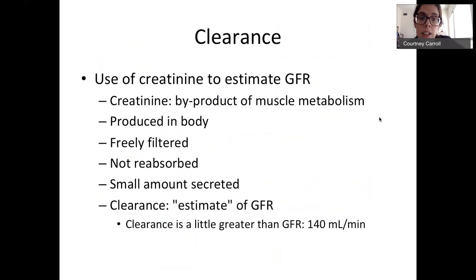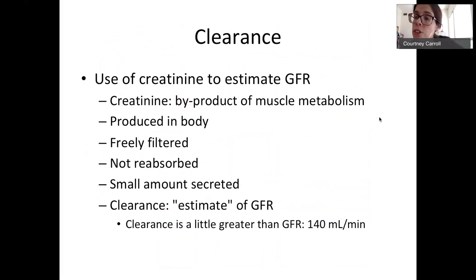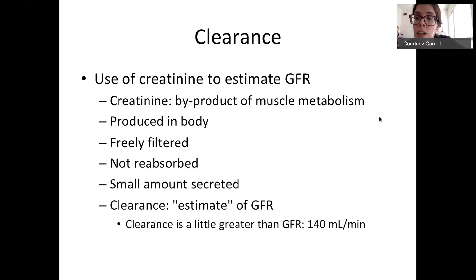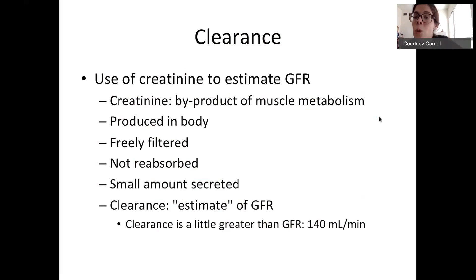You can also use creatinine — if you don't have inulin — to measure and estimate GFR. Creatinine is a byproduct of muscle metabolism. It's produced in the body, it's freely filtered, and it's not reabsorbed — it will easily pass from the blood into that filtrate. However, a small amount is secreted. So instead of a perfect one-to-one ratio where clearance equals GFR like it is for inulin, for creatinine it's only an estimate. Clearance will be slightly greater than GFR for creatinine because of that small amount secreted.